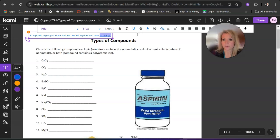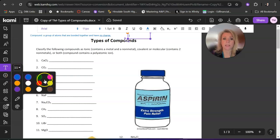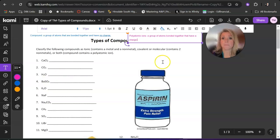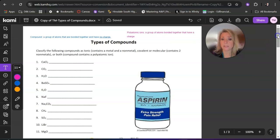So compounds are neutral. And the reason why I say that is because on this worksheet you're also going to be looking for something called a polyatomic ion. Polyatomic ions are a group of atoms bonded together that have a charge. And so compounds and polyatomic ions are a little bit different.